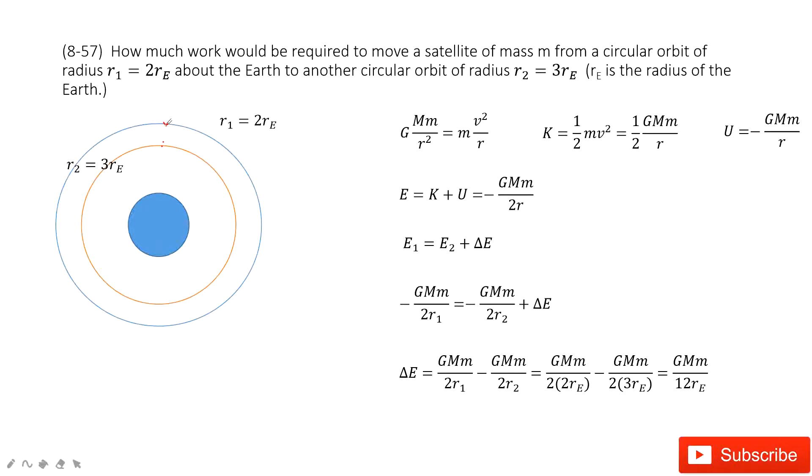Now we need to find the external work needed to move this satellite from R1 to R2. So how can we solve this problem? We consider the conservation of energy. So first thing we find the energy needed in R1, then energy needed in R2, and then we can find the extra energy.